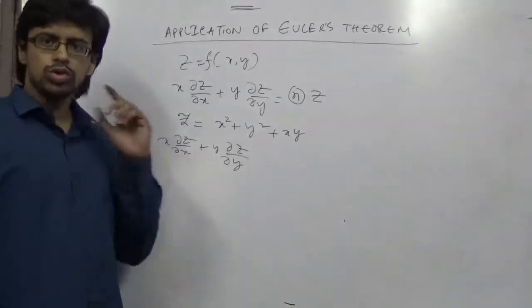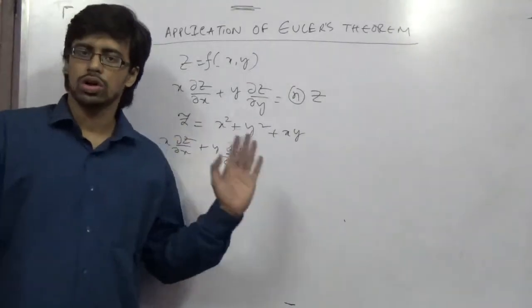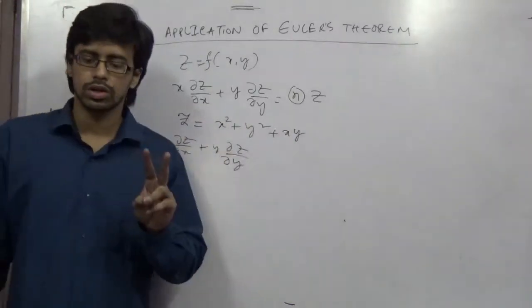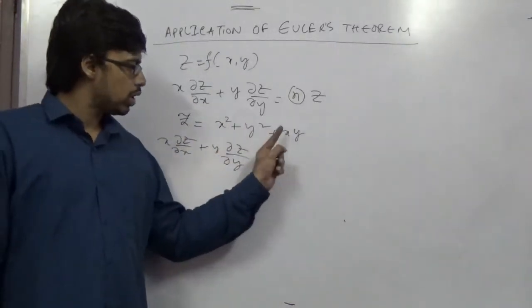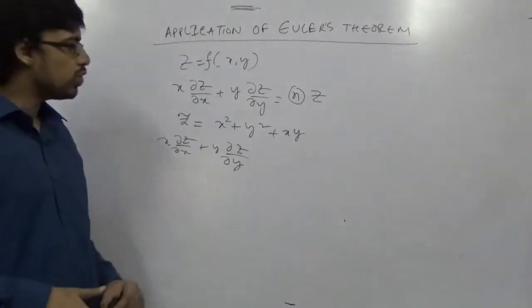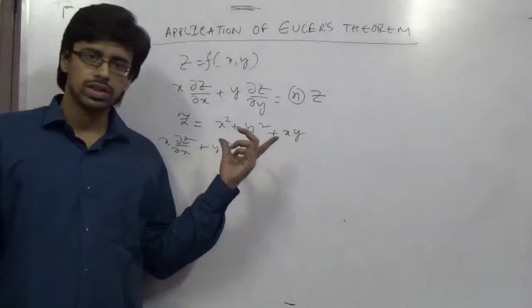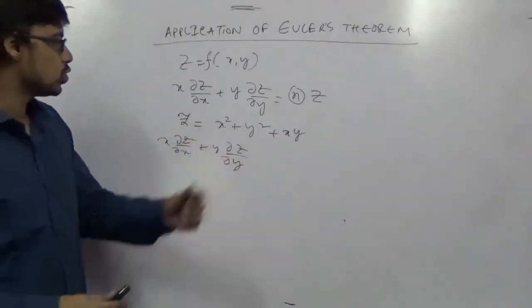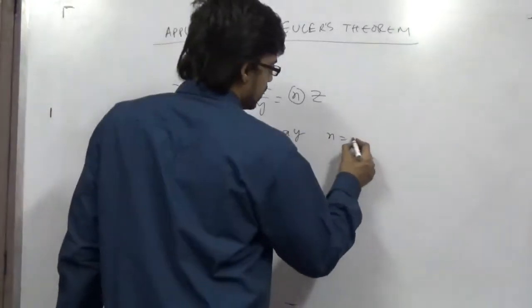Here first you need to check whether these are homogeneous or not. Homogeneity can be checked like: x squared is power 2, y squared again power 2, and in the xy term also 1 plus 1 equals 2. So this is homogeneous of degree 2. You can prove it, you can show that in the examination you obviously need to show. So this is 2, 2, 2, homogeneous of degree 2.